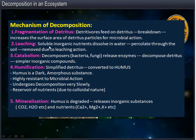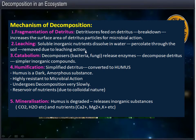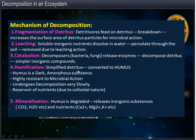Leaching is a process in which soluble inorganic nutrients dissolve in water, percolate through the soil, and are removed due to leaching action. Catabolism is the process in which decomposers release enzymes to decompose detritus into simple inorganic compounds.